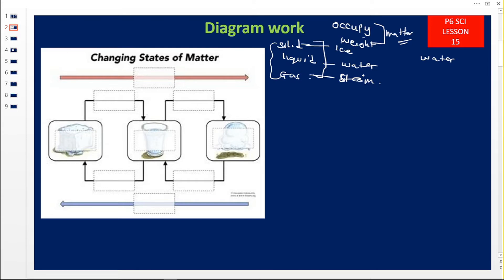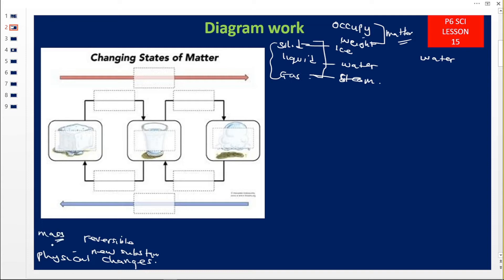When we look at changes in the states of matter, all those changes are said to be physical changes. Remember from primary five: physical changes are changes that are reversible — they can go back where they came from, they don't form a new substance, there is no new substance formed, no change in mass, and no change in weight.